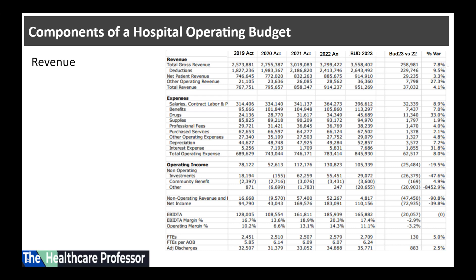Hospital revenue includes all the ways the hospital makes money by providing services and selling goods. Hospital revenue generating activities include patient services — revenue from patients and payers. Other sources of revenue include grants, donations, and activities such as parking, cafeteria revenue, and other revenue generating activities permissible within the hospital.